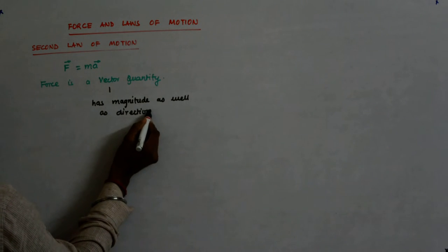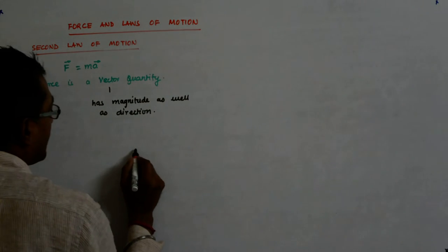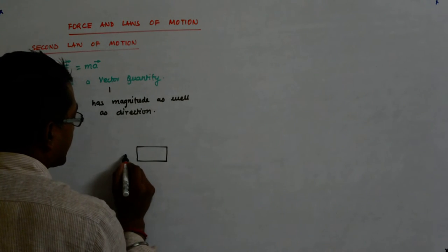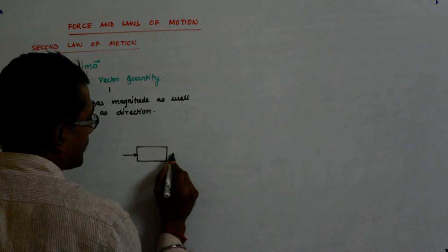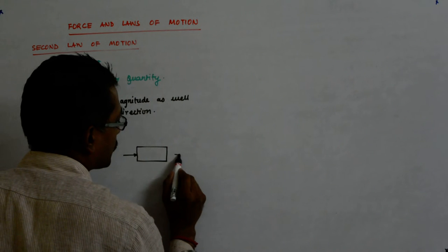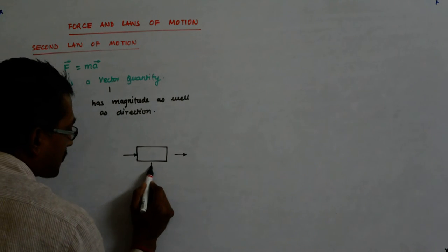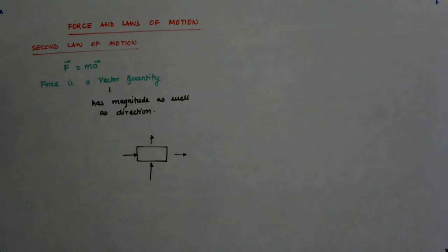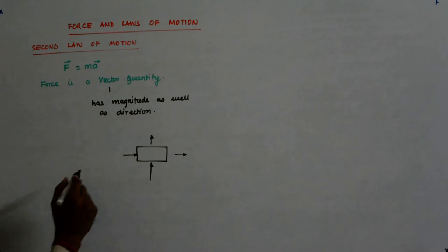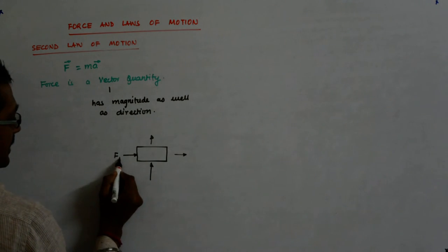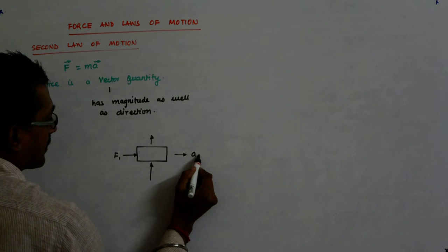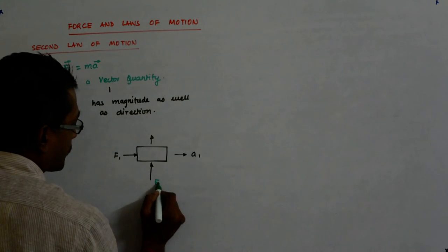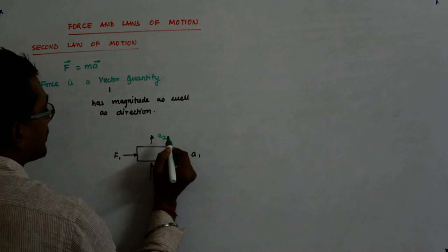Okay. So for example, a force that is acting like this will lead to an acceleration in this direction, while a force which is acting like this will be making an acceleration in that direction. So F1, A1, if my force is say F2, then my acceleration is A2.